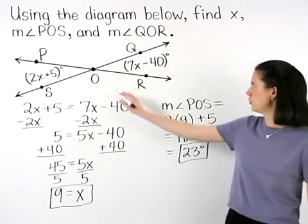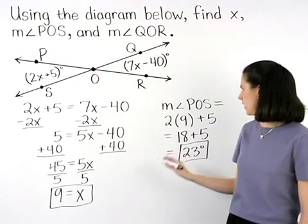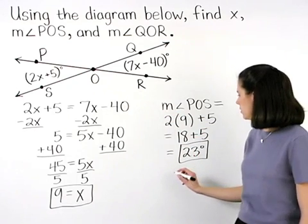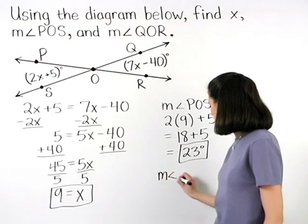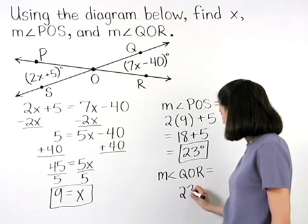To find the measure of angle QOR, remember that it's equal to the measure of angle POS. So the measure of angle QOR is also 23 degrees.